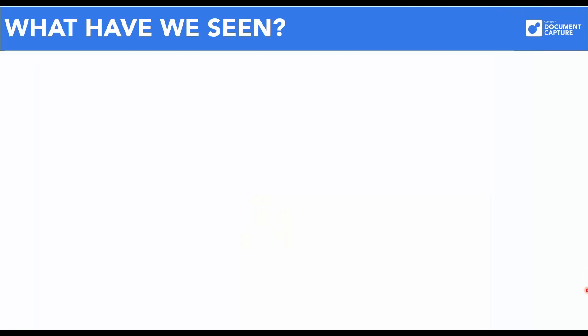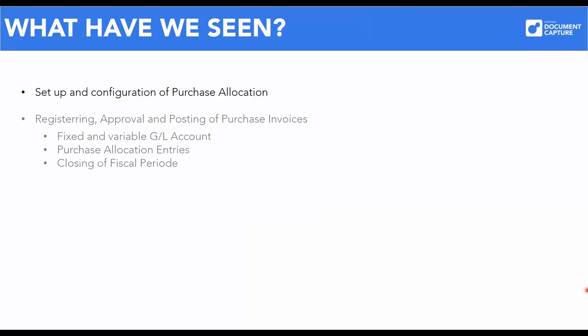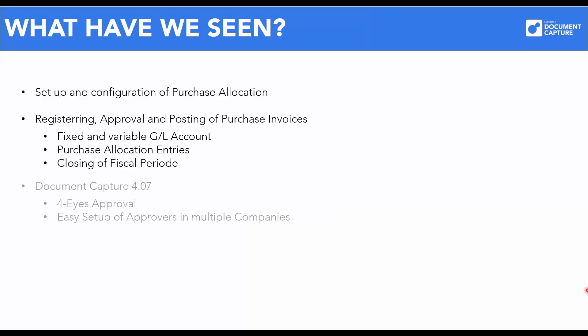So, what have we been through today? First, we set up automatic purchase allocation for the purchase documents. Then we registered, approved and posted some invoices. We gained insight into how Document Capture handles the allocation entries, including what happens when the fiscal period is closed. And we also took a brief look at some of the new features in version 407.